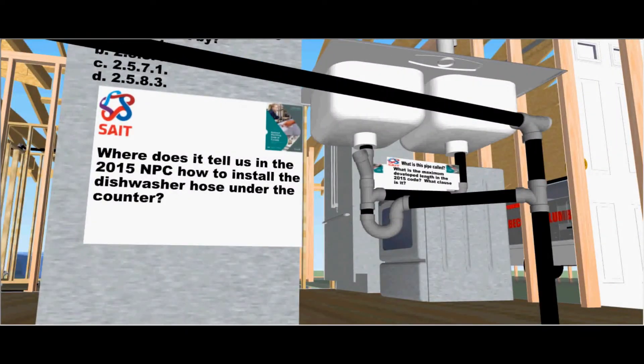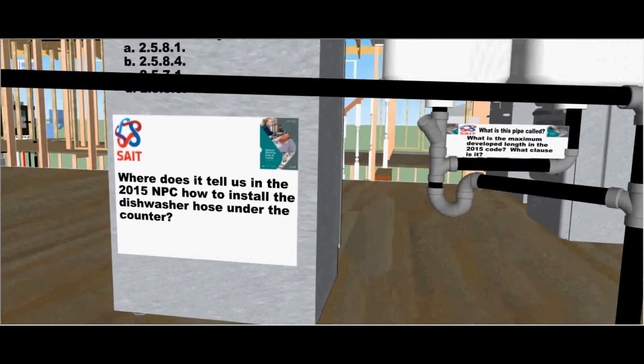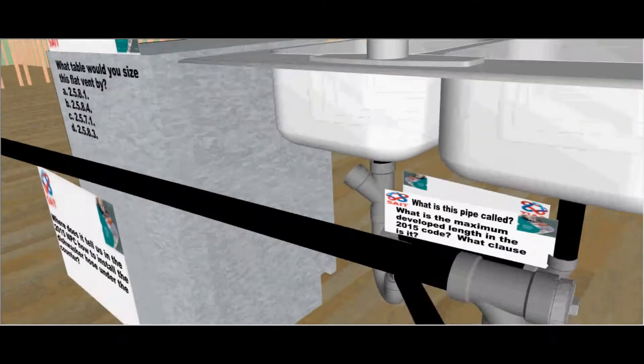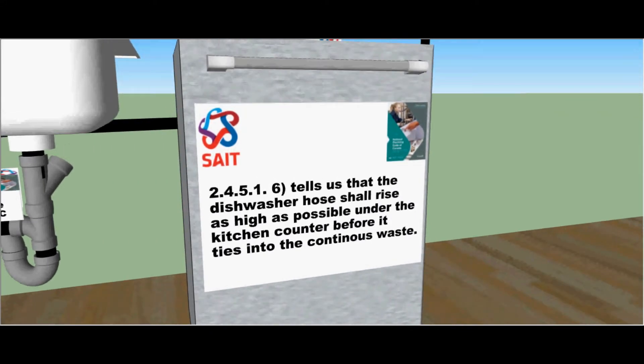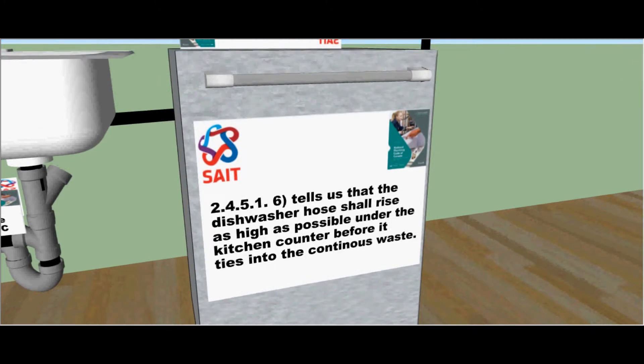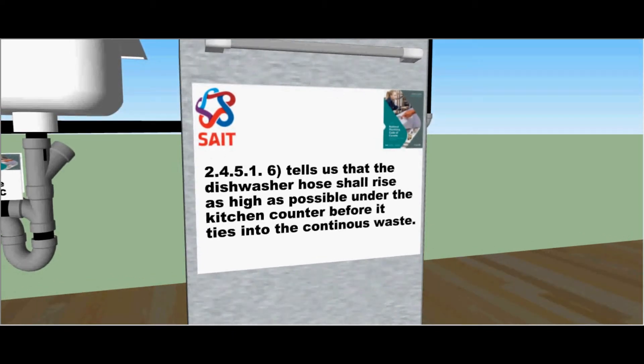Where does it tell us in the 2015 NPC how to install the dishwasher hose under the counter? The code tells us that the dishwasher hose shall rise as high as possible under the kitchen counter before it ties into the continuous waste. This is found in clause 2451 subsection 6 of the 15 code.